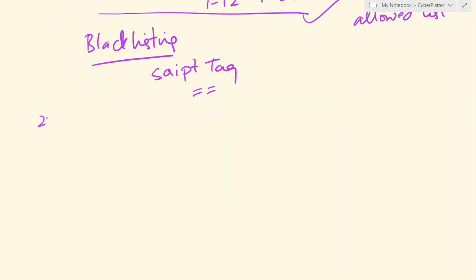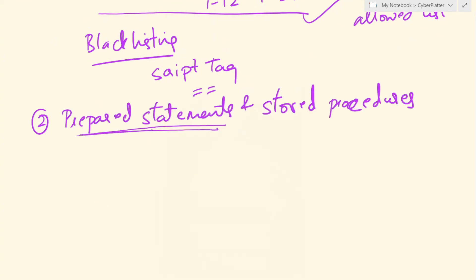The next prevention technique is prepared statements and stored procedures. So the prepared statements and stored procedures requires the developer to write a code that has the command already specified. The command is already specified in this code and the user input is taken only as the data.